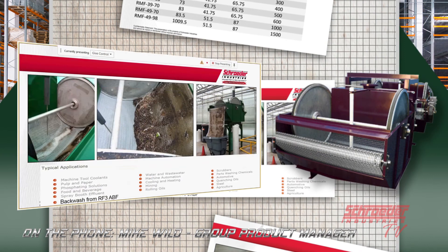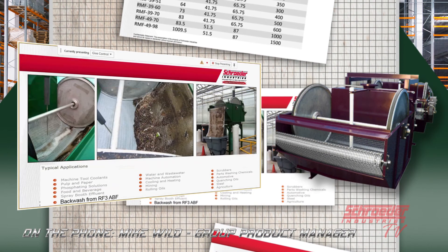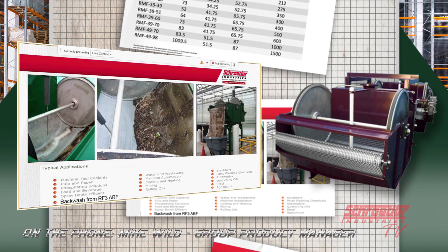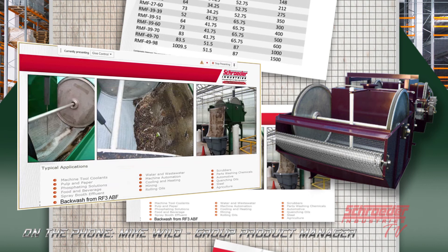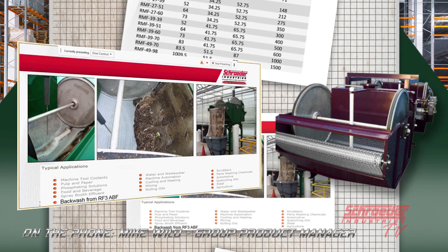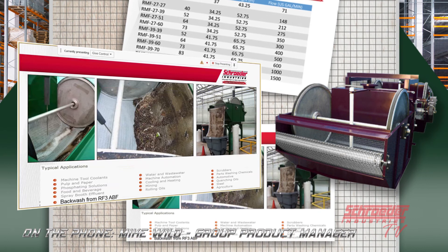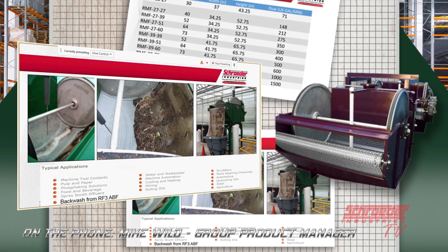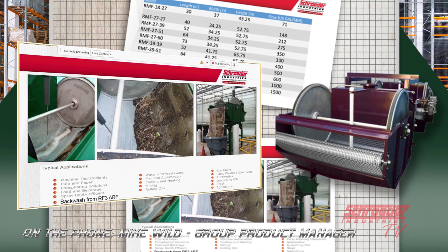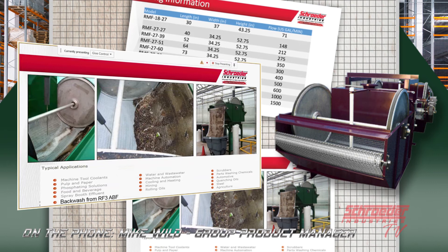Looking at the typical applications for the rolling media filter: the big one is the backwash from the RF3 automatic backwash filter. Food and beverage is an area we haven't gotten into as much with automatic backwash systems, but we've had some successful installations there, as well as in spray booth effluent, rolling oils, and quenching oils. It's also been utilized in the steel industry and parts washing.